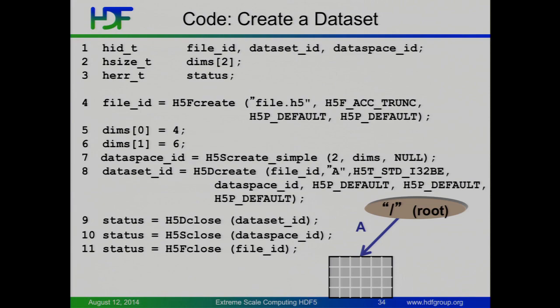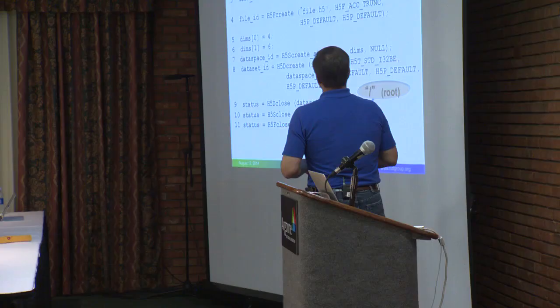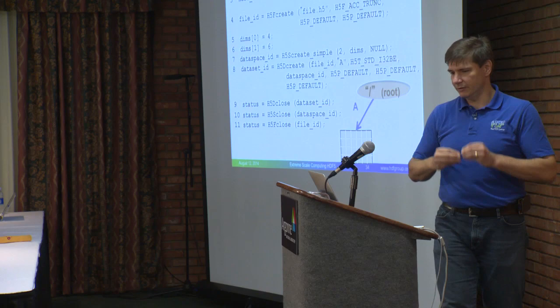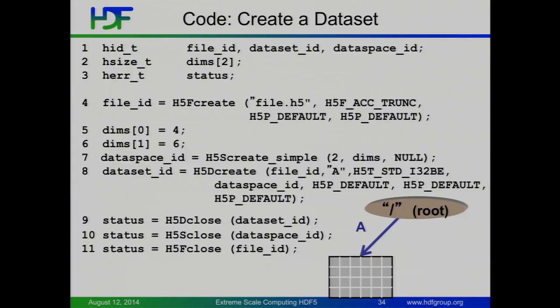Then we create our dataset using the file ID. Our dataset is going to be called 'A'. It's going to have a pre-defined data type — H5T, so it's a data type. This is a standard IEEE 32-bit big-endian floating point number. We're going to use the data space that we created earlier. I have a whole bunch of defaults that skip the special properties — there's plenty of documentation. You close everything down. This is very similar to the outline we had before, except there's no write or read here. This shows all the core pieces of getting a dataset to disk, creating a nice little array off the root group.